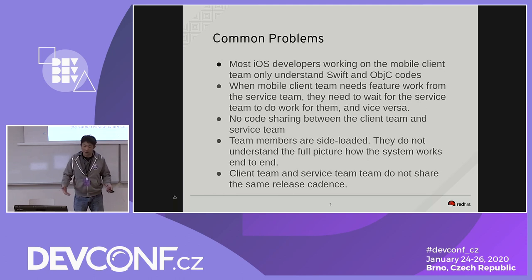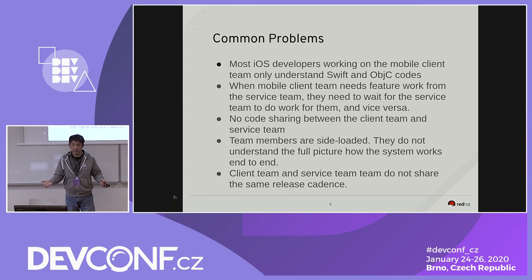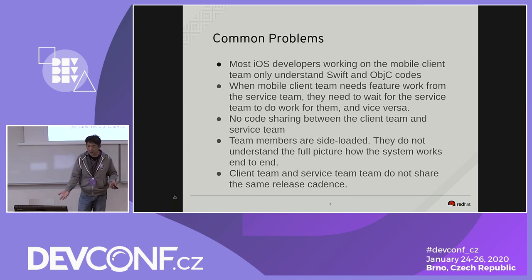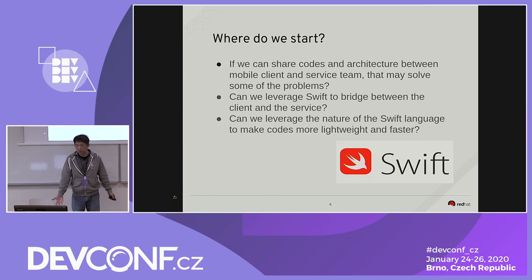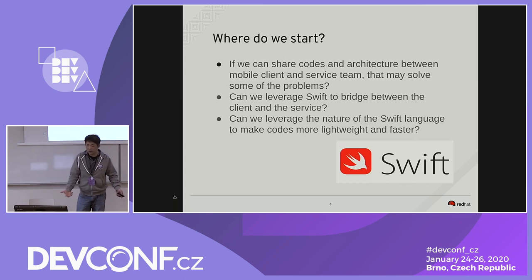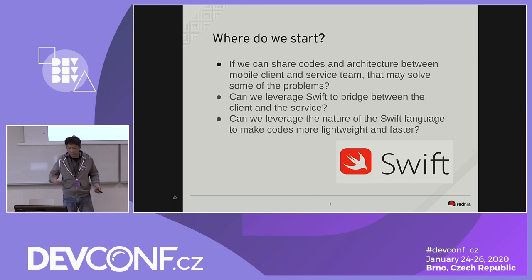Team members were siloed — they either had no front end or no back end knowledge. They also don't share the same release cadence; in order for the client team to get a new feature from the service team, they need to wait for the next release. If we could start sharing code and architecture between the client and service, that would solve some of the problems. We could leverage Swift as a bridge between the client and service team.